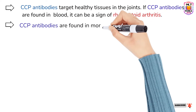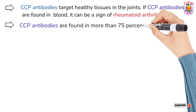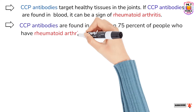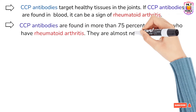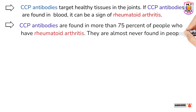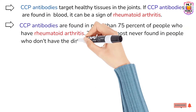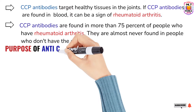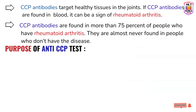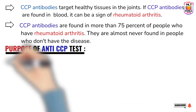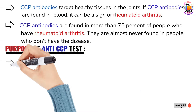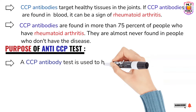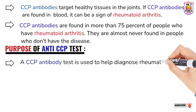CCP antibodies are found only in patients who have rheumatoid arthritis, and they will not be found in the blood of patients who don't have rheumatoid arthritis. So only patients who have rheumatoid arthritis will have anti-CCP antibodies in their blood, which helps us understand the purpose of the anti-CCP test.